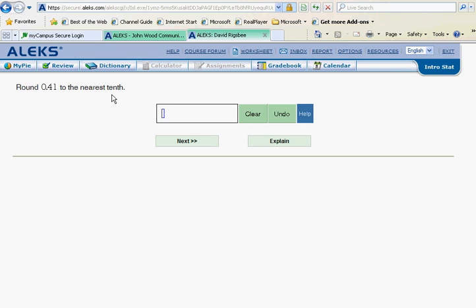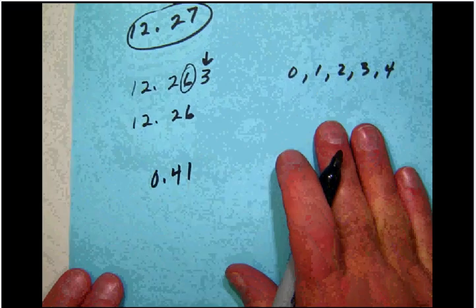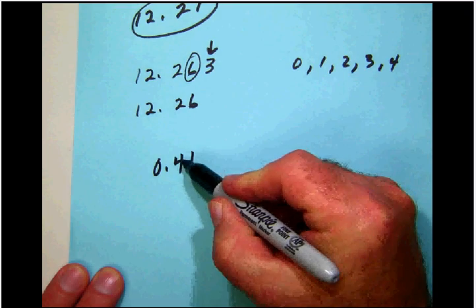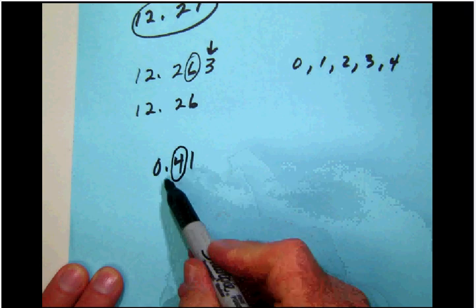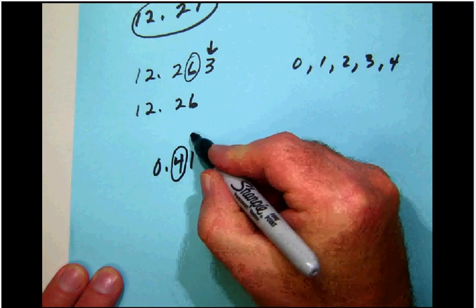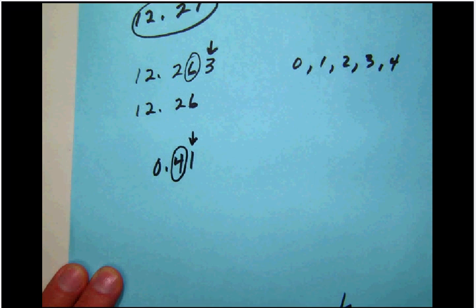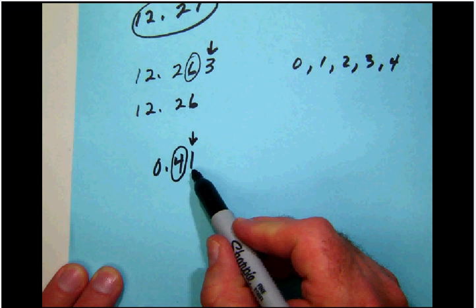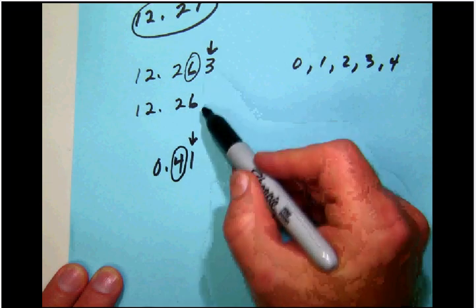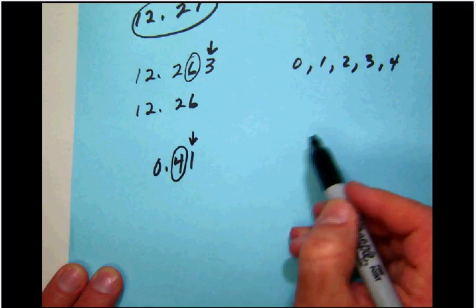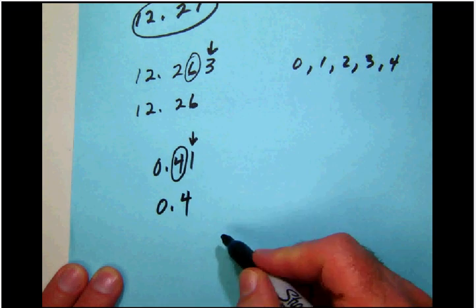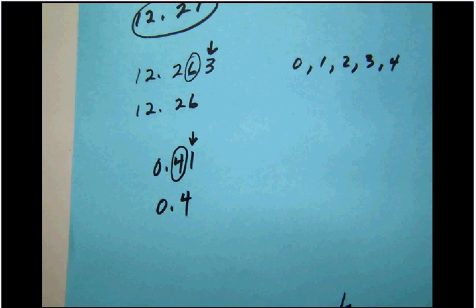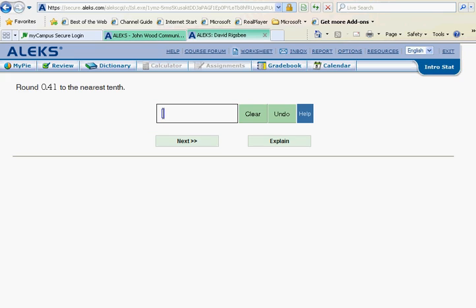Okay, we have 0.41 to the nearest tenth. Let's write down 0.41. They want that to the nearest tenth. At 0.41, the nearest tenth would be this digit because it is in tenths place. We'll put the arrow always on the digit to the right of the circle. Notice that in this case it is a one—not enough to increase this—so we simply cut the decimal off at the circle and we'll have 0.4.